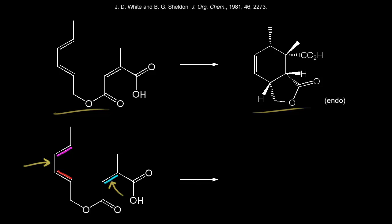Let's show how those two rings form, and we won't worry about stereochemistry right now. Let's just think about moving those six pi electrons to form our two rings. Our pi electrons in red move into here to form a bond between these two carbons. Our pi electrons in blue move into here to form a bond between these two carbons. And our pi electrons in magenta move into here. So let's draw our cyclohexene ring — here's our cyclohexene ring. Our electrons in red formed this bond, our electrons in blue formed this bond, and the electrons in magenta formed this bond.